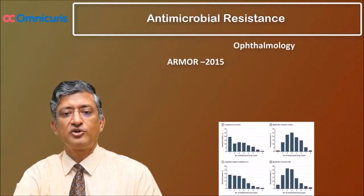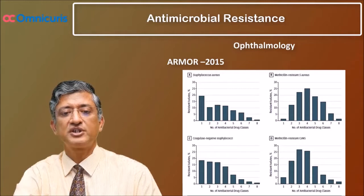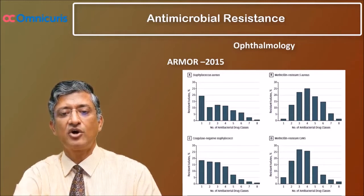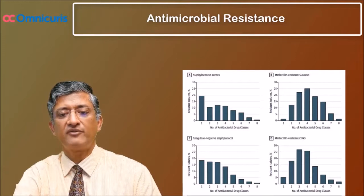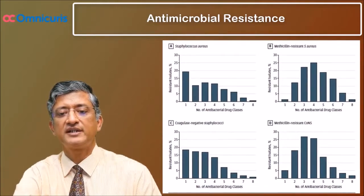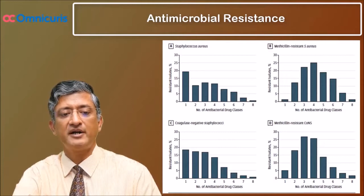The study also looked at the susceptibility of resistant isolates to other antibiotics. They found that contrary to susceptible Staph aureus, methicillin-resistant Staph aureus and other coagulase-negative Staph are resistant to multiple classes of antibiotics. The graph clearly shows that many of the methicillin-resistant isolates are resistant to three or more classes of antibiotics.